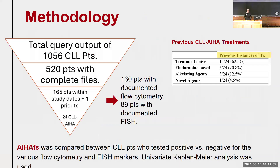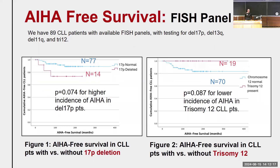Our methodology consisted of a total query output of 1,056 CLL patients: 520 with complete files, 165 within the study dates with a prior CLL treatment, and a total of 24 CLL-AHA patients. About 20% of these patients developed AHA in reaction to the use of fludarabine. We compared autoimmune hemolytic anemia-free survival between patients with available FISH panels testing for deletion 17p, 13q, 11q, and trisomy 12. We found trends towards higher incidence of AHA in deletion 17p patients (p = 0.07) and lower incidence in trisomy 12 patients — notably none of the trisomy 12 patients developed AHA at all.